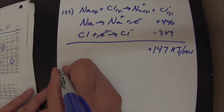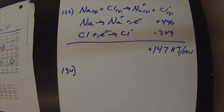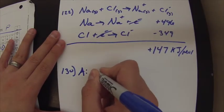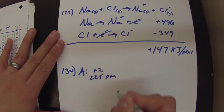And then last question, number 130. Basically, the trick with number 130 is it says that your atom A has an effective nuclear charge of plus 2, but is 225 picometers away.